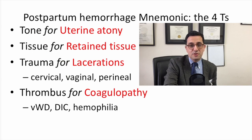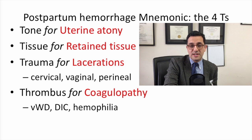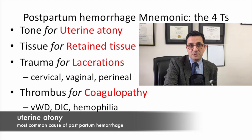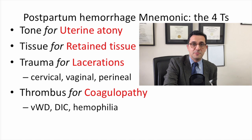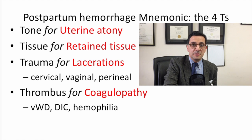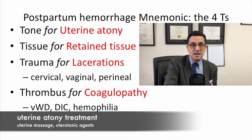Moving to postpartum hemorrhage, the first of the four T's is uterine atony — the most common cause, accounting for 80% of postpartum hemorrhage. It presents immediately after birth and delivery of the placenta; the uterus is boggy and not firm. Treatment is uterine massage and the use of uterotonic agents.